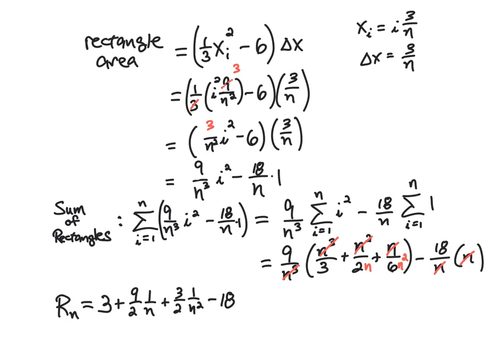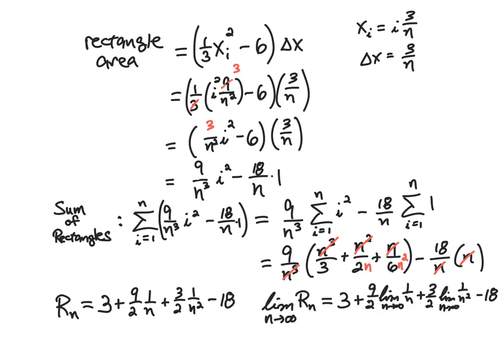Distributing 9/n³ into (n³/3 + n²/2 + n/6): n³/n³ = 1, n²/n³ = 1/n, n/n³ = 1/n². So 9/n³ times that expression gives 9·(1/3) + 9·(1/2n) + 9·(1/6n²) = 3 + 9/(2n) + 3/(2n²). Then the 18/n·n simplifies to 18. So Rₙ = 3 + 9/(2n) + 3/(2n²) − 18.